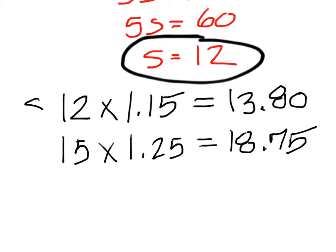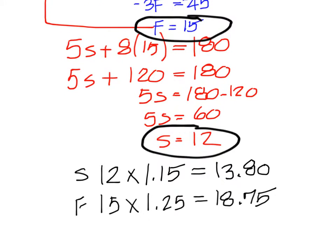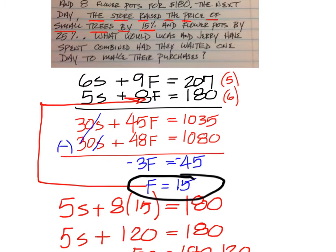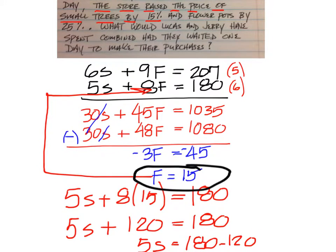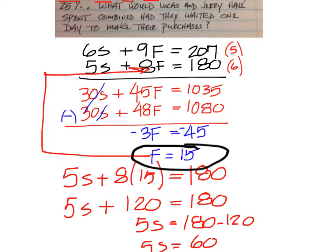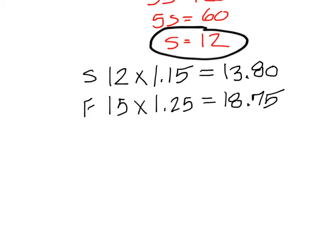So we know those are the two new prices: this is for the small tree and this is for the flower pot. Now you have to go back and figure out what they would have spent had those prices been in effect when they were there to make their purchases. For the top one, Lucas, 6S plus 9F.